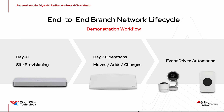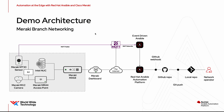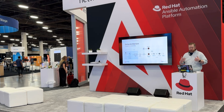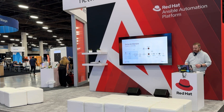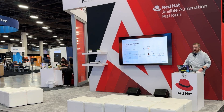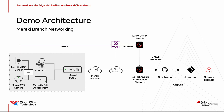From a demo architecture standpoint, everything is going to be driven from a GitOps type of workflow, with the Red Hat Ansible Automation Platform in front of the Meraki dashboard. The network we're going to configure has a Meraki MX68 firewall, an MR44 access point, a security camera, and an MT30 IoT button, which we'll showcase as we use it to drive some of the event-driven use case.